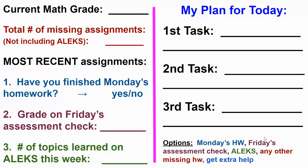Your options are: Monday's homework, Friday's assessment check, Alex — those are the top three. Any other missing homework? If you've finished those three, check if you have anything else missing and do it. Also, get extra help if you're struggling on something or got something wrong on an assessment check. Fill in tasks one, two, and three — be specific. If you want extra help, put that down. If you've got everything done, use this time for Alex or to make up anything extra that you're missing.